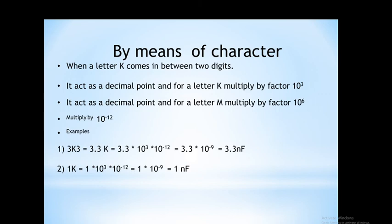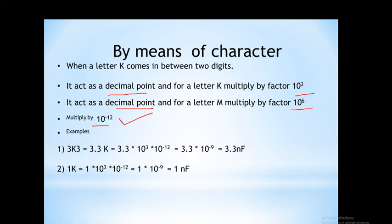By means of characters, sometimes on the surface of the capacitor 3K3, 1K, or some combination of number and alphabet is written, and we can find the value from this. Simply replace the alphabet K or M with a decimal point. If there is K, multiply by 10 to the power 3; if there is M, multiply by 10 to the power 6. Then multiply the value of capacitance by 10 to the power minus 12.